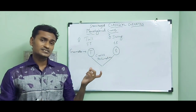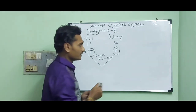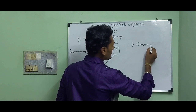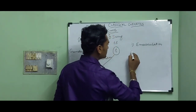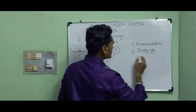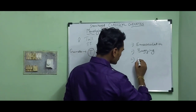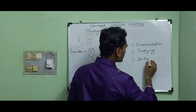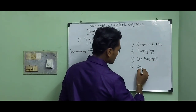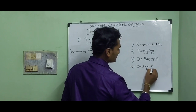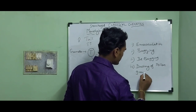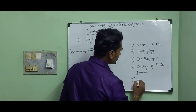Cross-pollination means the transfer of pollen grain from the anther to the stigma of a different flower. Cross-pollination involves the following five steps: the first step is emasculation, the second stage is bagging, the third stage is debagging, the fourth stage is dusting of pollen grains, and the final stage is rebagging.